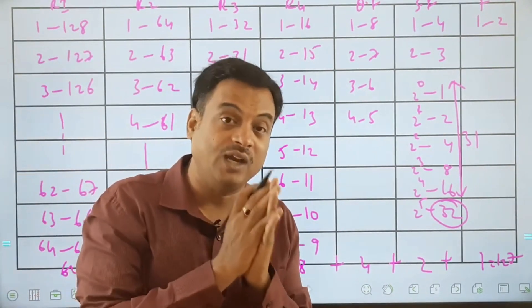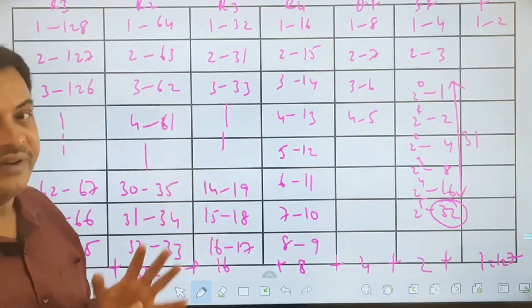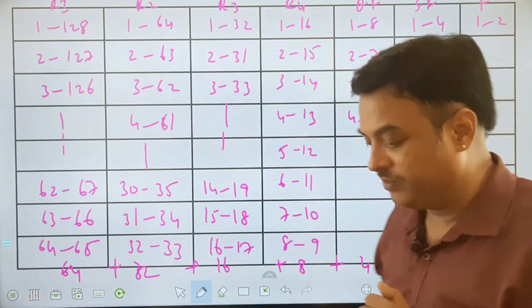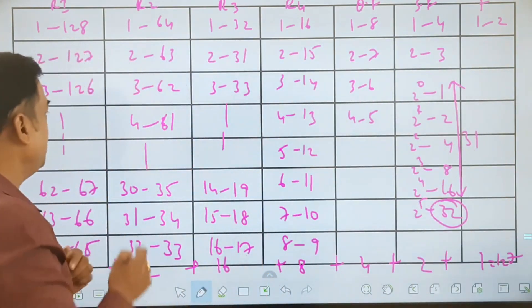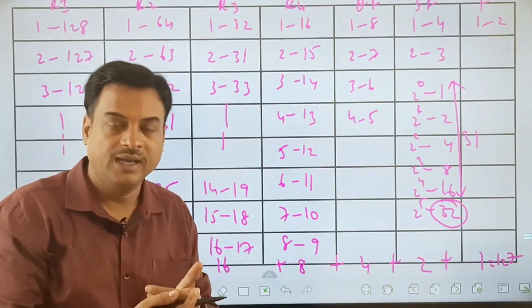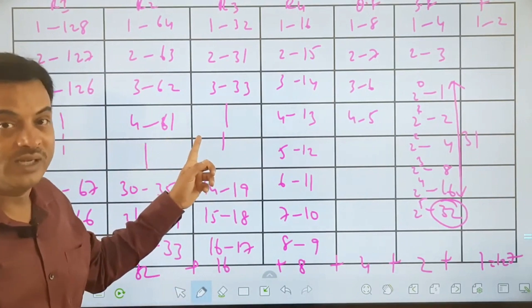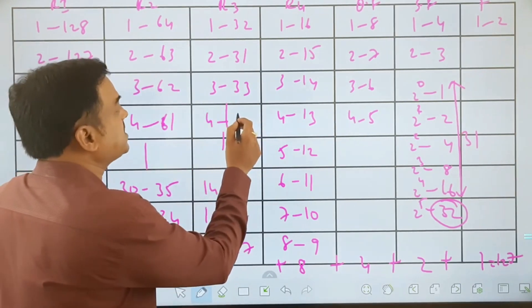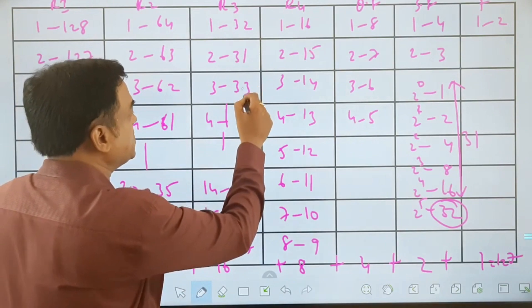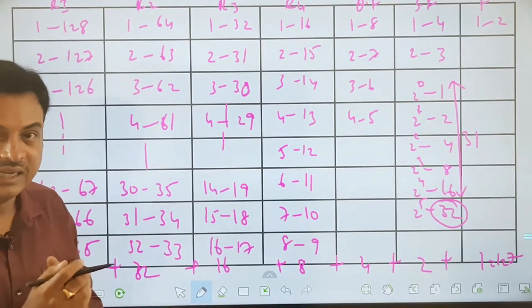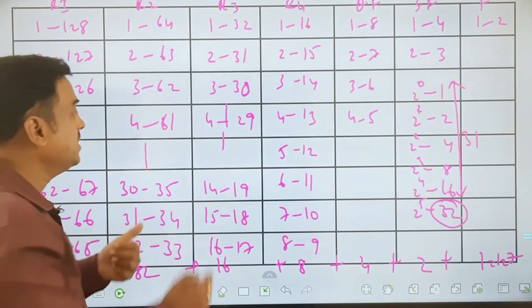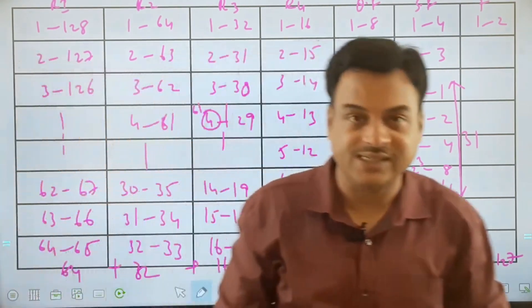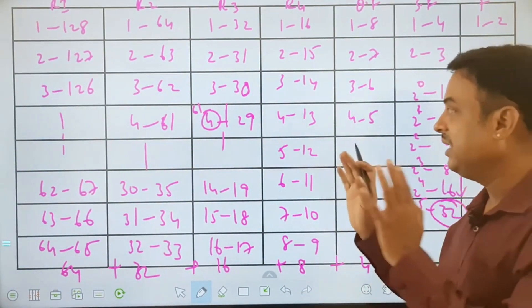Now let us understand what upset means with an example. Between players 4 and 61, player 4 is the more likely winner. If 61 wins instead, that is an upset. Now, normally player 4 should play against 29 in the next round. If an upset happens and 61 replaces player 4's position, then 61 will play against 29. Between 61 and 29, player 29 is the better player. If 29 wins over 61, it is a normal match; but if 61 wins, that is another upset.